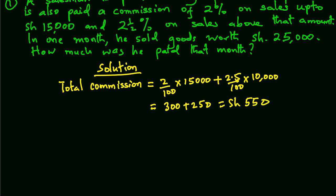And therefore, total pay will be his salary plus commission. So in this case, we are going to have 12,000 plus 550. This gives us a total pay of 12,550 shillings.